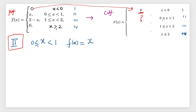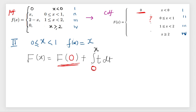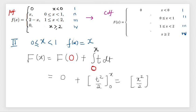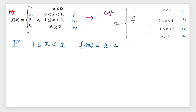Now we want to find the CDF for the second interval, from zero to one. Using the current formula: the previous interval has no function, so we only integrate the current function. We replace x by t and integrate, giving us x squared by 2. So the CDF for the second interval is x²/2.